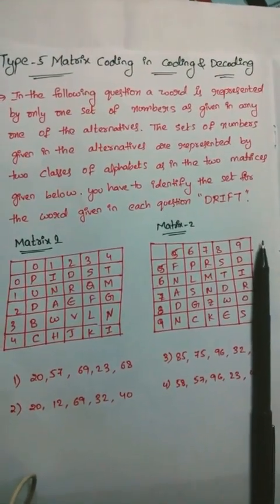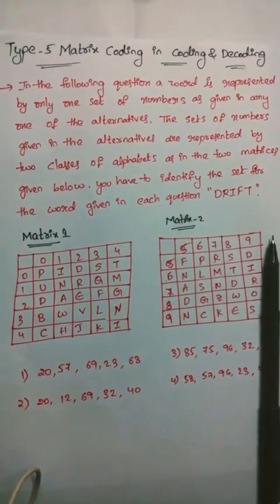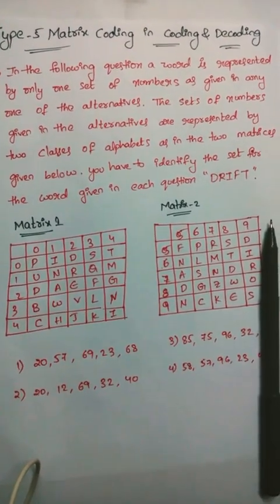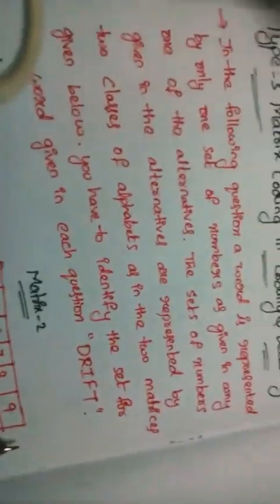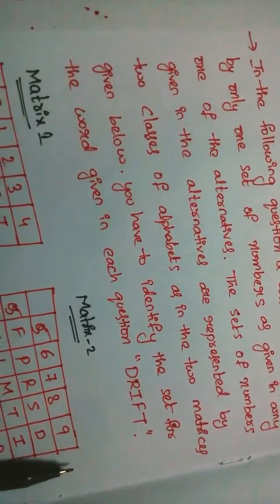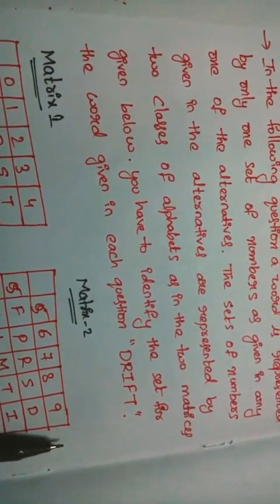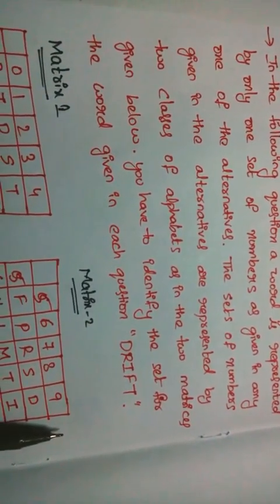Hi friends, today we are discussing matrix coding in coding and decoding. This is the fifth type and the last model in this topic. In the question, a word is represented by only one set of numbers as given in any one of the alternatives. The set of numbers given in the alternatives are represented by two classes of alphabets as in the two matrices given below. You have to identify the set for the word given in each question.